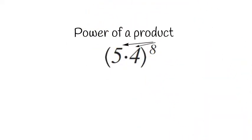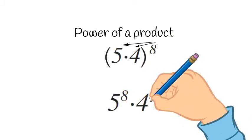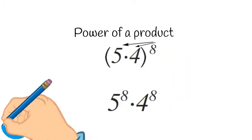So the power of a product, we distribute the exponent. So in this case, we get 5 to the 8th times 4 to the 8th.